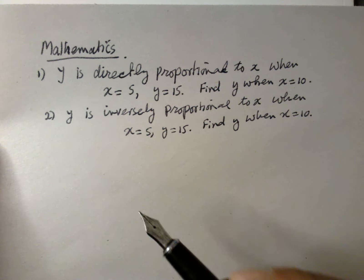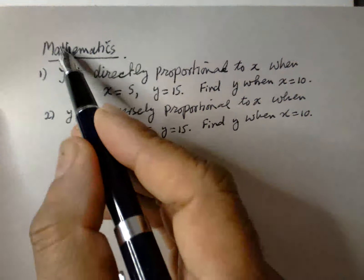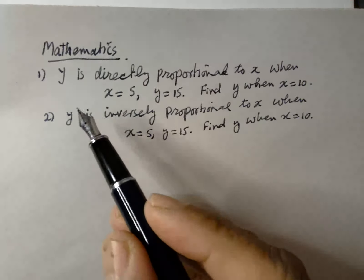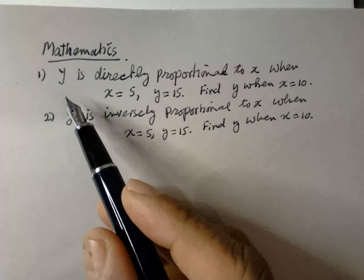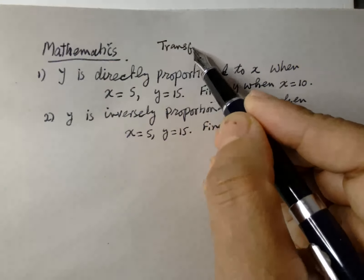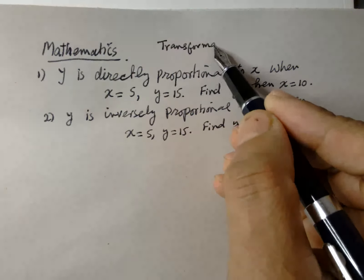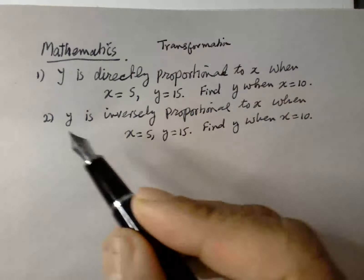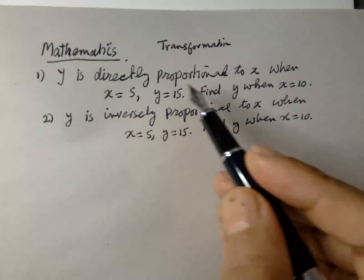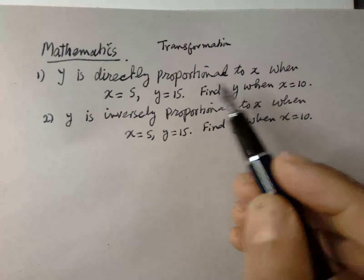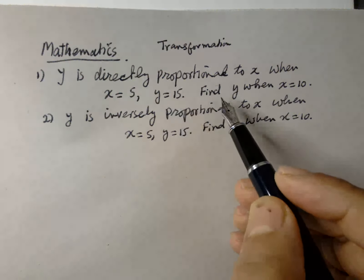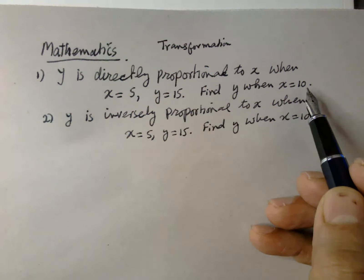Mathematics. So the question is about transformations. When y is directly proportional to x, when x is equal to 5 and y is equal to 15, find y when x is equal to 10.